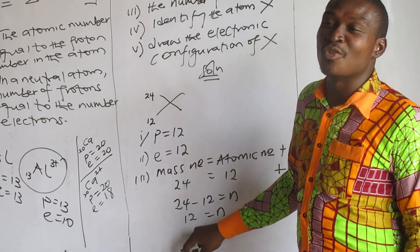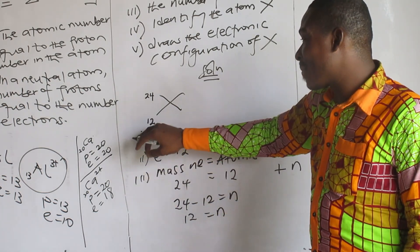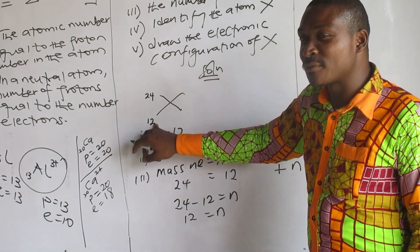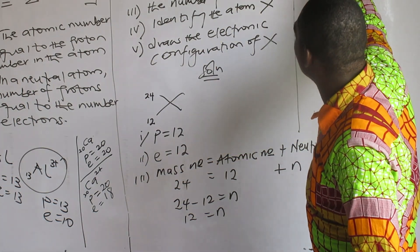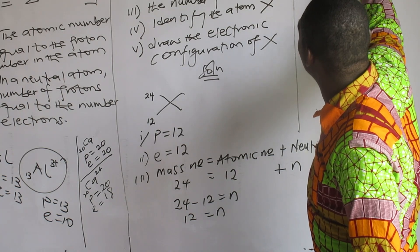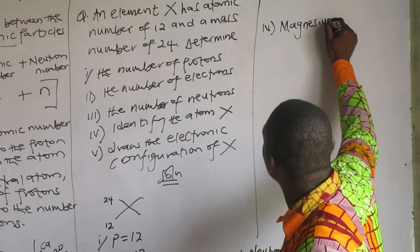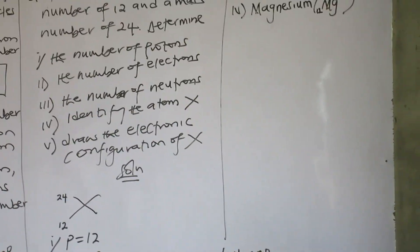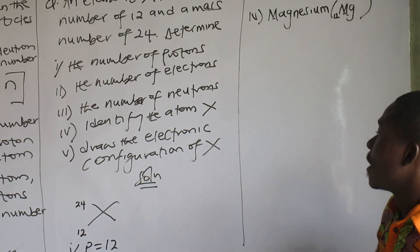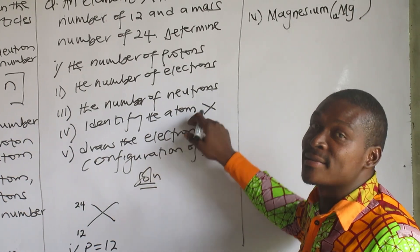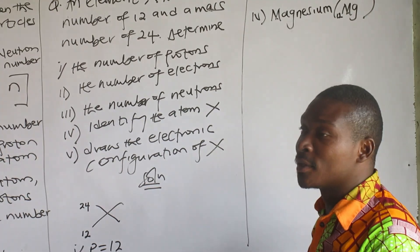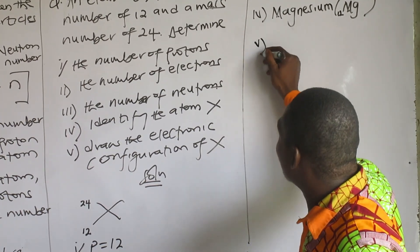Again, the neutron number doesn't mean it's aluminium. Atomic number is what is used to identify the atom, not the neutrons. So the atom there is magnesium. Atom X is magnesium. Draw the electronic configuration of this.